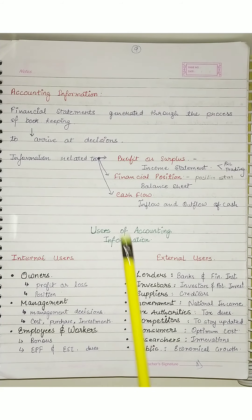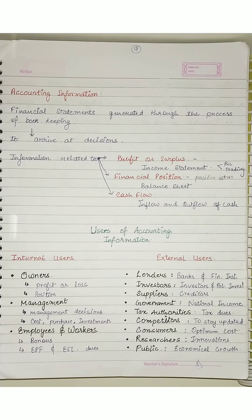And the third thing is cash flow. The inflow and outflow within a specific period — generally we take one year — so within any specific period, how much inflow, how much outflow is there, what decisions are being made, how payments are happening. From the inflow and outflow statement, we can find out when we have cash available and when we don't.